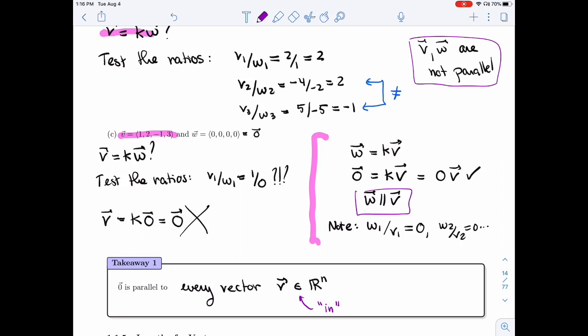All right, so this takeaway is cool because it tells you that the zero vector, in some sense, is in every single direction because it's parallel to every single vector.